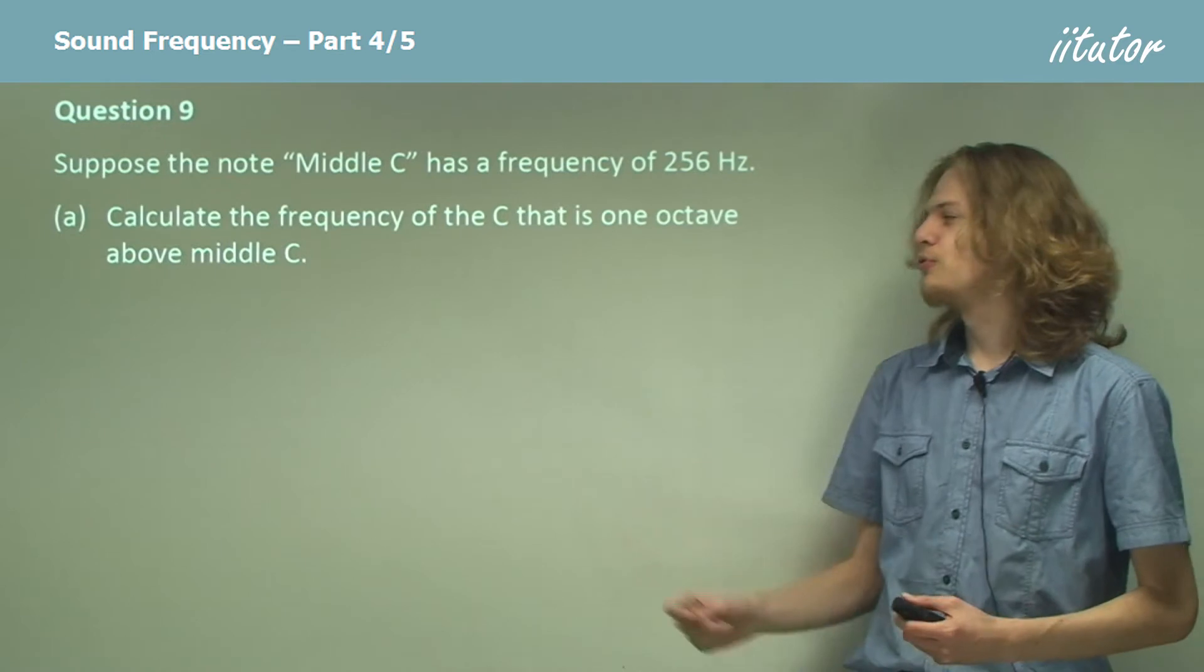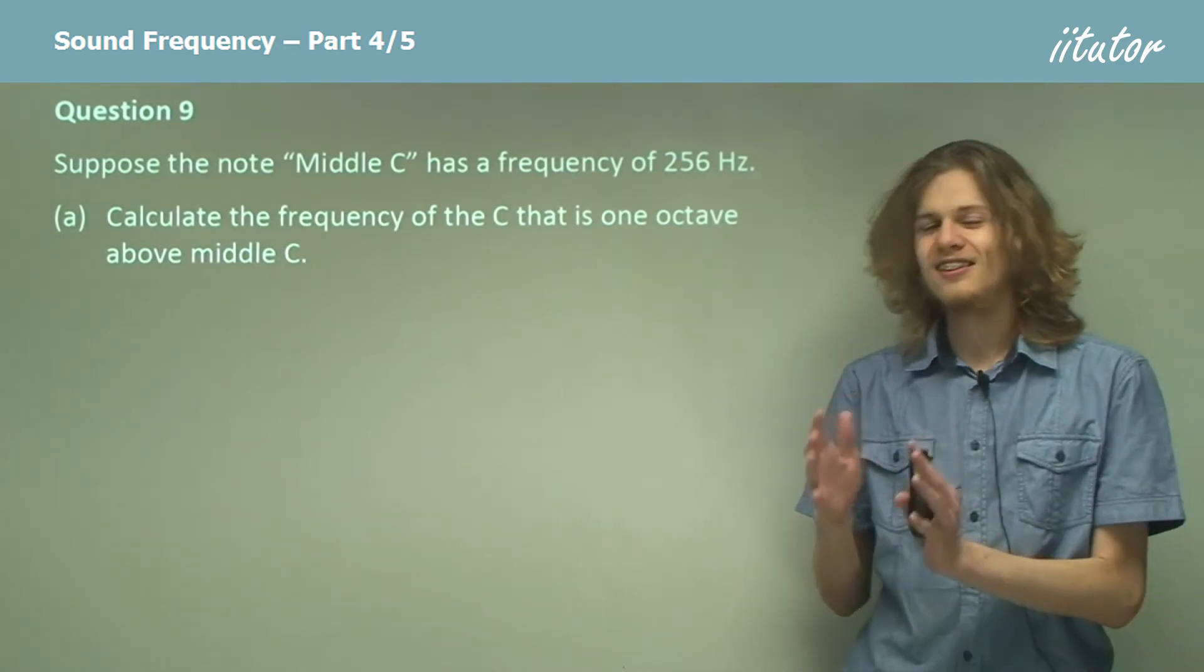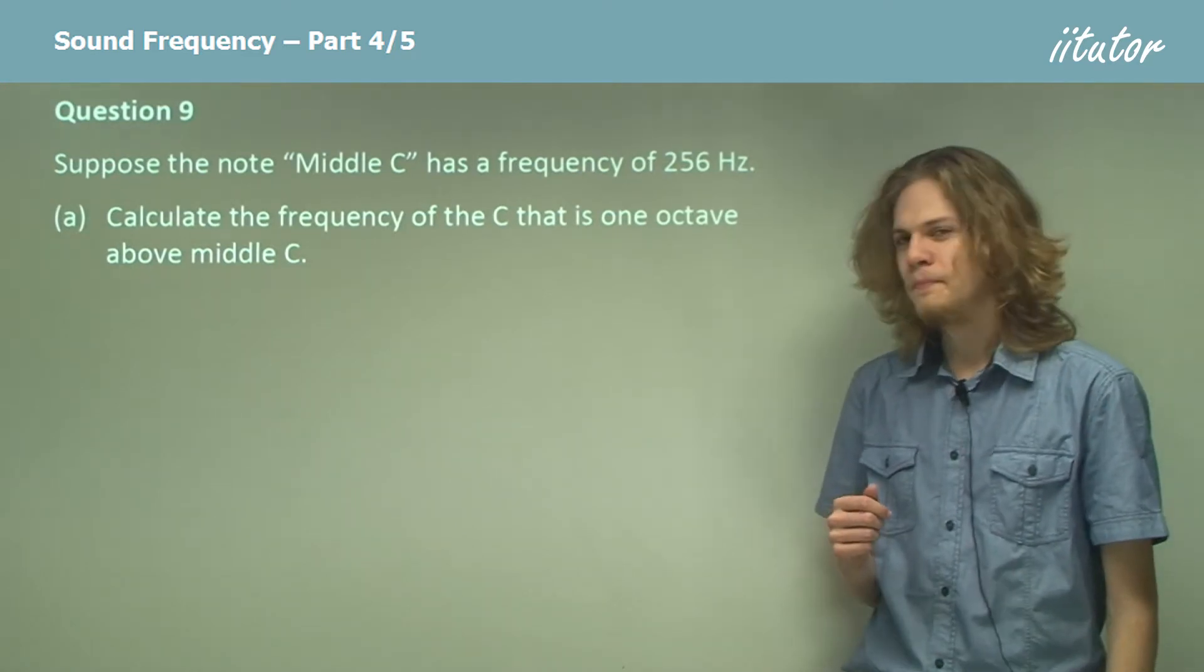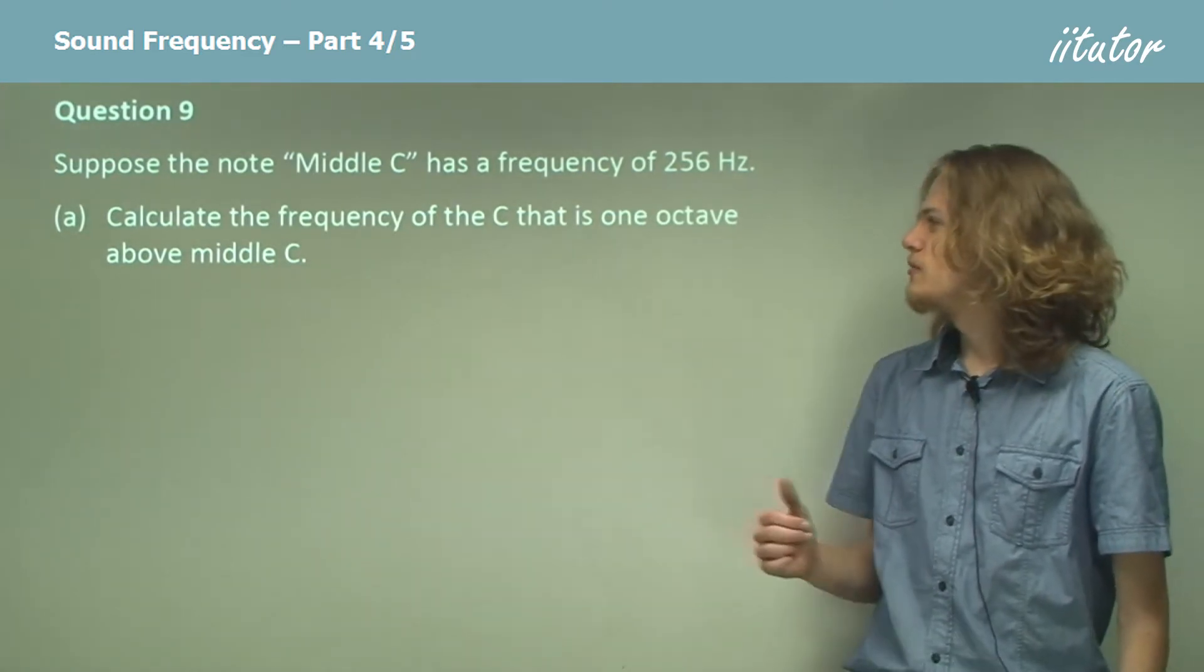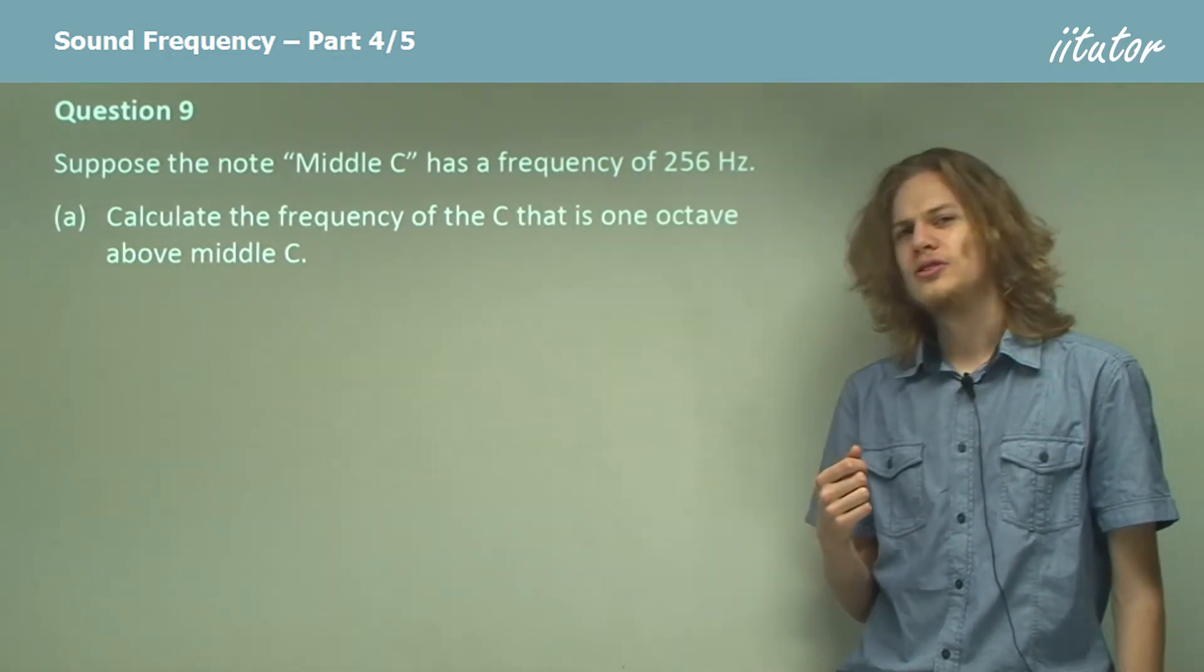Suppose the note middle C has a frequency of 256 Hertz. This isn't exactly accurate but it's accurate enough for our purposes. Calculate the frequency of the C that is one octave above middle C. So how is this going to change?